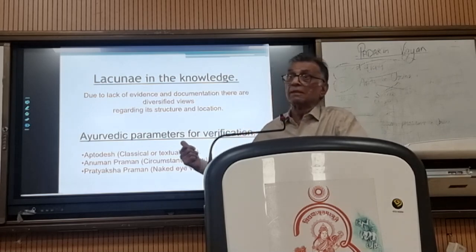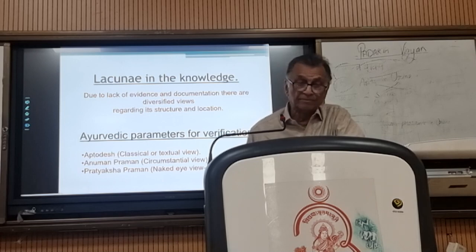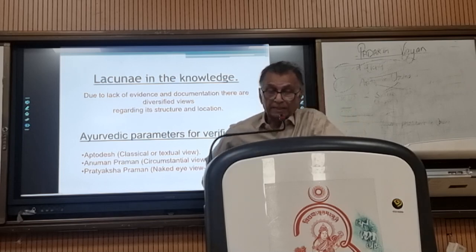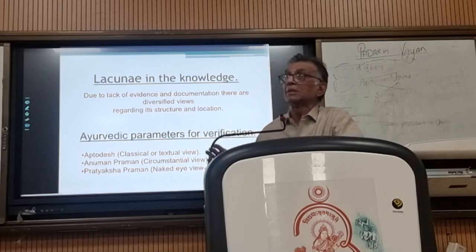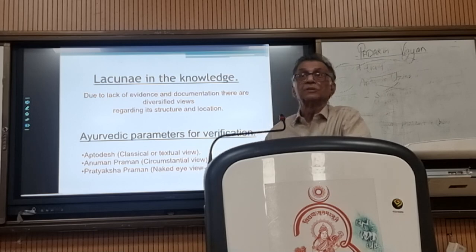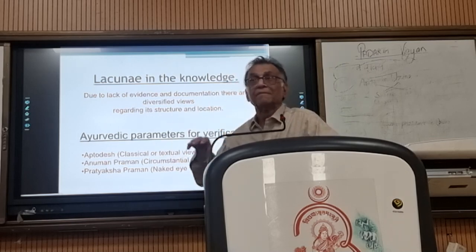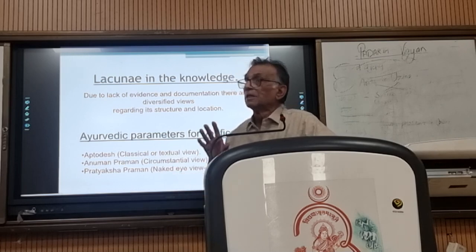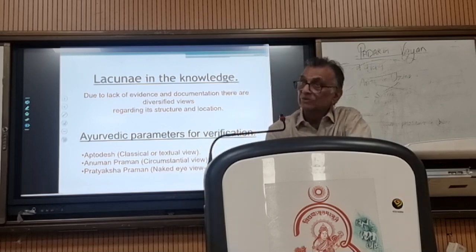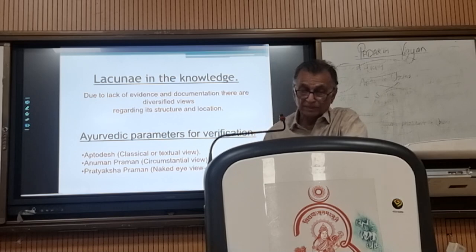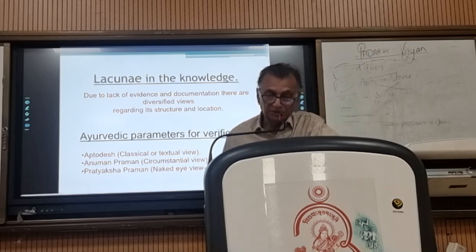In this Marma study, what was the lacuna? Due to lack of evidence and documentation, there are diversified views regarding its structure and location. If you go through the literature, you will find that somebody says it is at the confluence of the circumference of fineness — Sringataka and all that — the occipital region situation. So that was the lacuna in the knowledge. Ayurvedic parameters for verification: the Prama, then the Anumana Prama, and Prataksha Prama — these are the three I used.